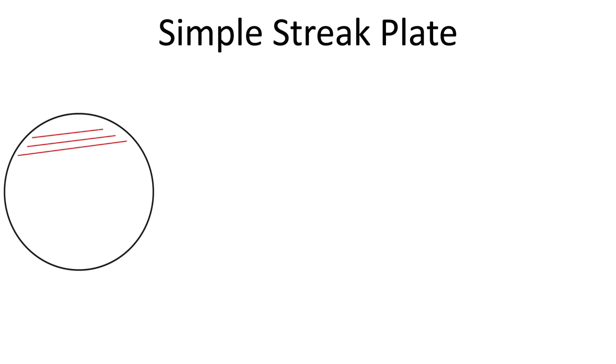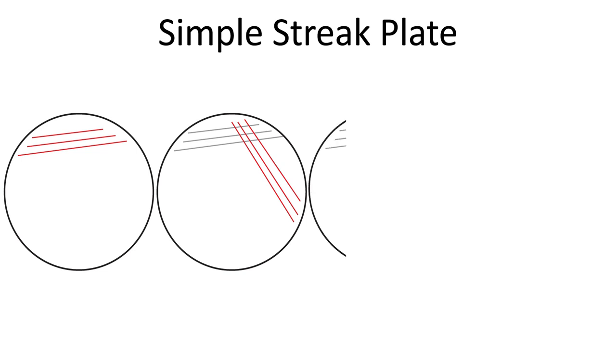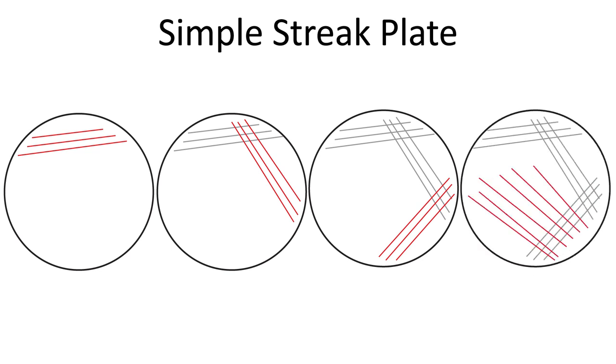Flame your loop cool it off and now you want to do three more streaks again across the plate and each streak should be crossing over the streaks you made before. Flame your loop do this a third time so you're going to cross the second set of streaks three times each time streaking out each time crossing those of the previous streaks and then the last time you do this you just want to streak multiple streaks into the center as many times as you can.